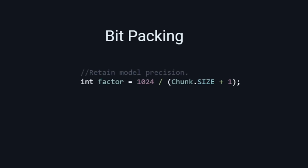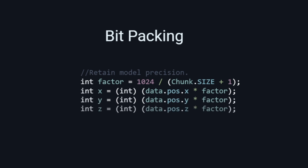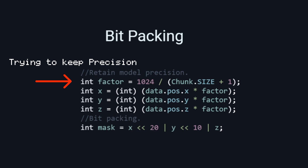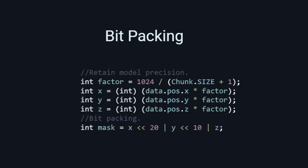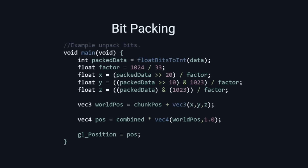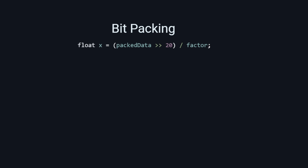Another option is bit packing all the vertex data — like position, texture UVs, and lighting — into a single value to reduce memory usage. The only downside is some precision loss, which leads to limited voxel models that have to be scaled down within the cube shape. It does come with a performance gain when sending data to the shaders. On the shader side, we unpack the data and divide it by a factor to get the precision for our model.